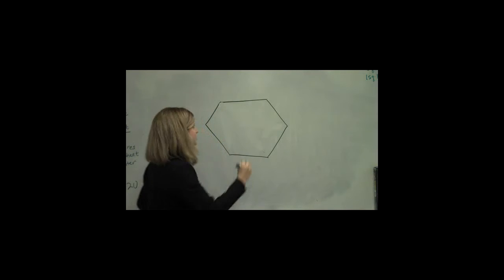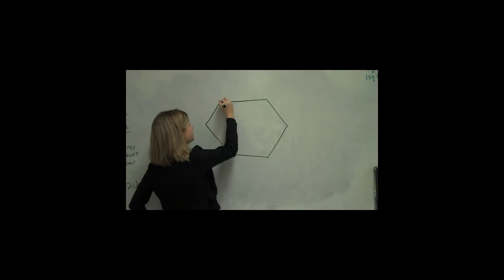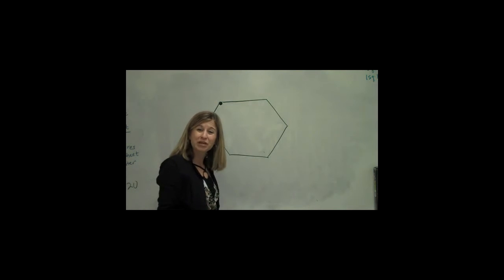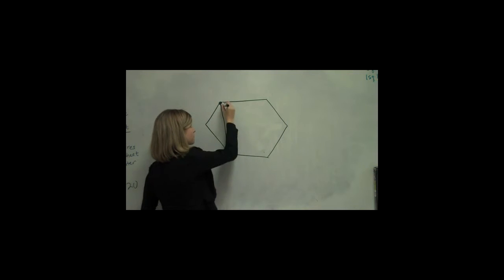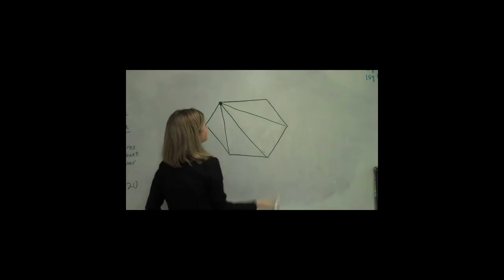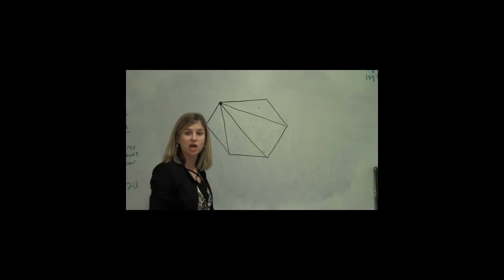The little trick that I learned is start at one point, maybe this point, and draw diagonals to see how many triangles you can actually make inside the shape. Looks like I can make one, two, three, four triangles.